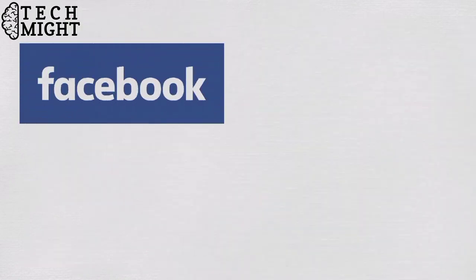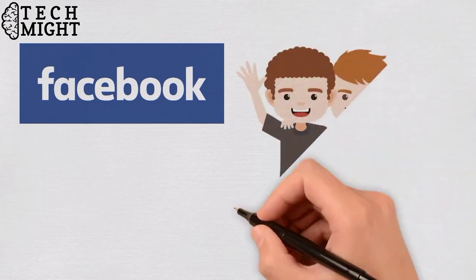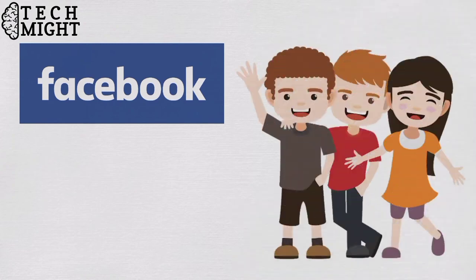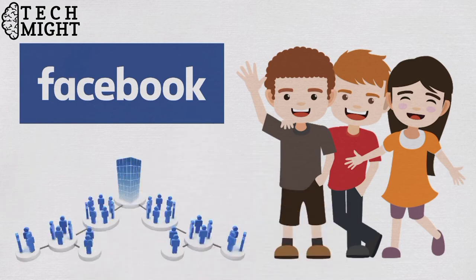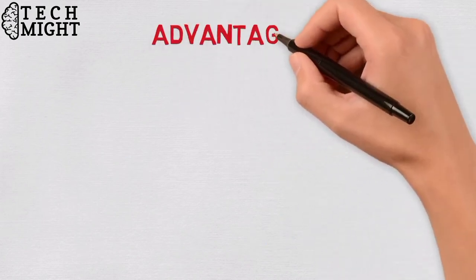Facebook uses past data of the users to automatically give suggestions to tag your friends based on their facial features and their images. AI is used everywhere by large organizations to make an end user's life simpler. Let's discuss about advantages of artificial intelligence.